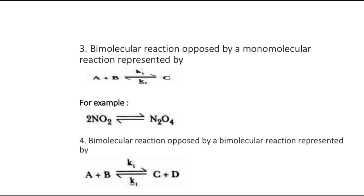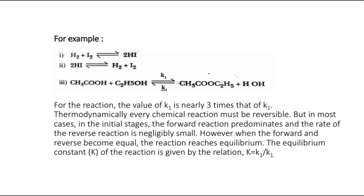The fourth subtype is where a bimolecular reaction is opposed by a bimolecular reaction — two molecules on each side. We have H2 plus I2 combining to give two molecules of HI, and similarly the two molecules of HI break down into one molecule each of H2 and I2. Another example is acetic acid reacting with ethanol — the reaction between a carboxylic acid and an alcohol results in the formation of ethyl acetate and water. K1 is the rate constant for the forward reaction, which is nearly three times that of the backward reaction with rate constant K-1.